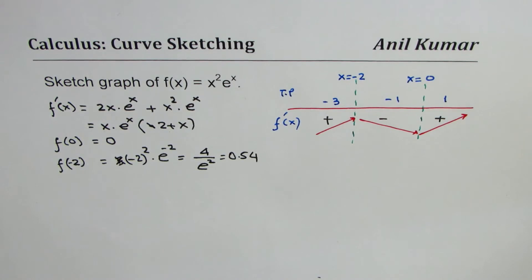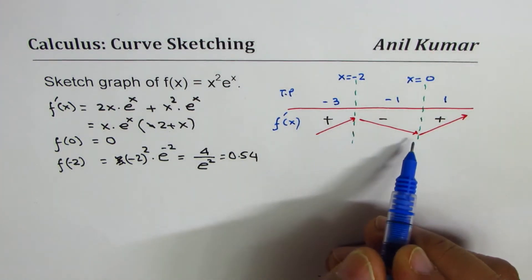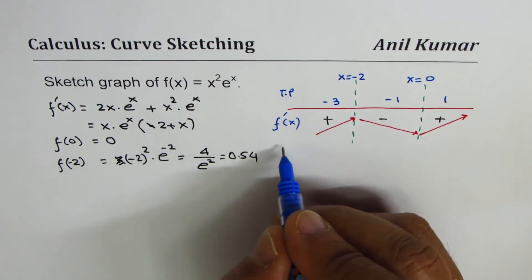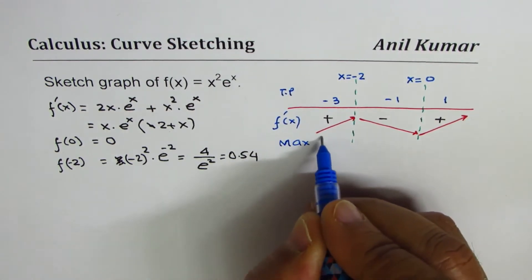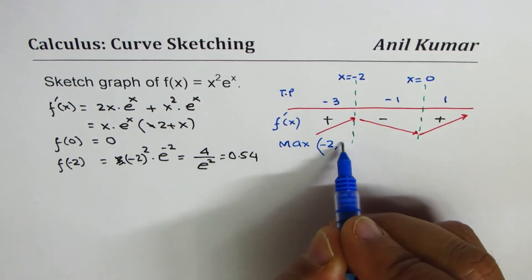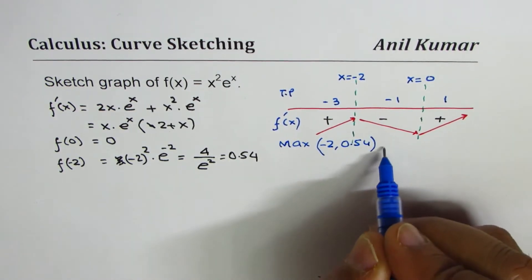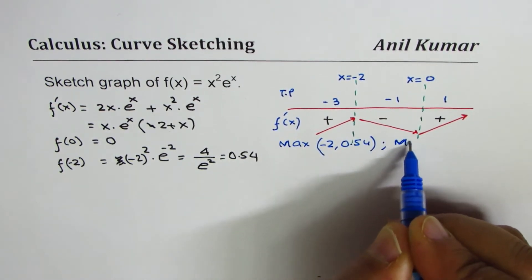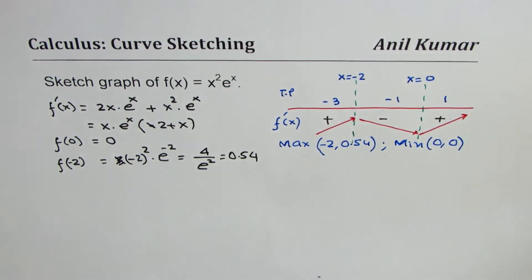So when the derivative is positive the function is increasing, and when negative it is decreasing, and then positive again. Therefore we have a relative maximum at x = −2 with value approximately 0.54, and a relative minimum at (0, 0). That is the information we get from the first derivative.